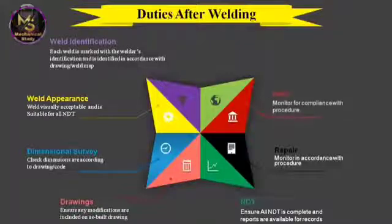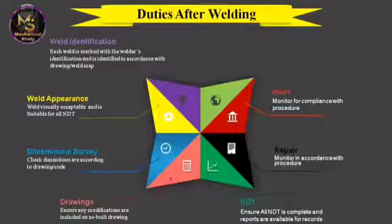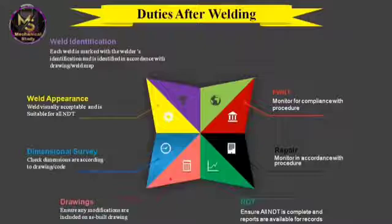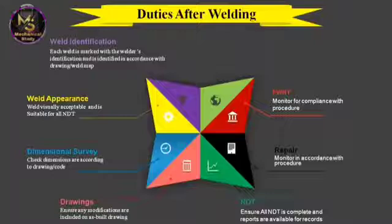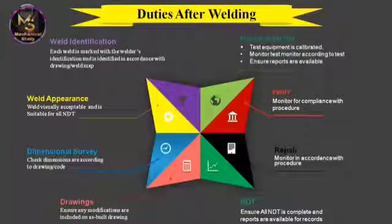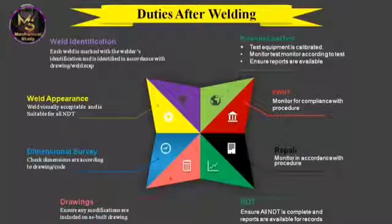Post-weld heat treatment to be used after production welding shall be specified in the WPS and used in qualifying the welding procedure. The heating and cooling method and rates per hour according to thickness will also be specified in the WPS. For pressure and load testing, ensure pressure gauges are calibrated for hydro and pneumatic tests, and that tests are performed according to procedure.